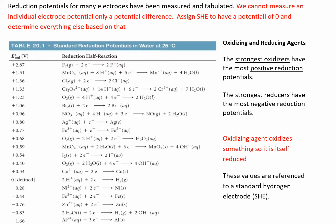This is just a shortened version of a really long table — the full version will be in the appendix of the book, or you can just Google 'standard reduction potentials' to see a much more complete table. From this table, we can look at oxygen and compare the strength of oxidizing and reducing agents.